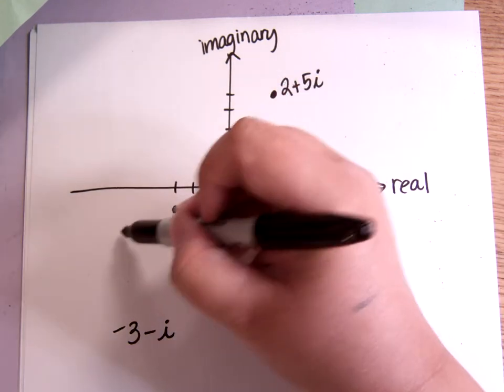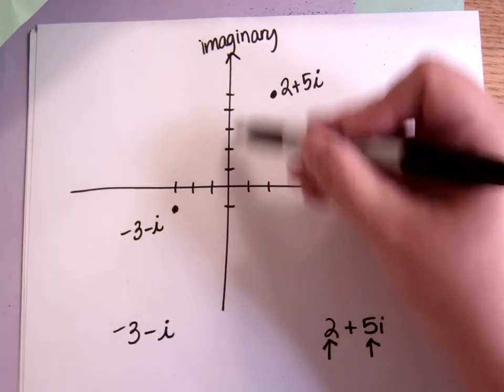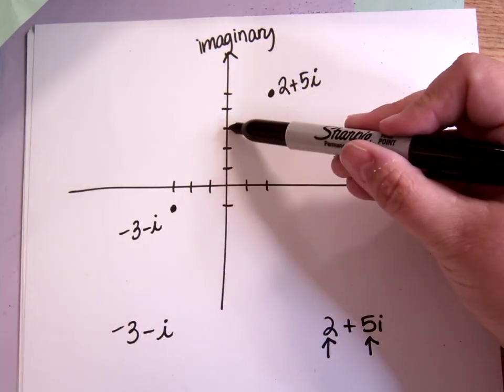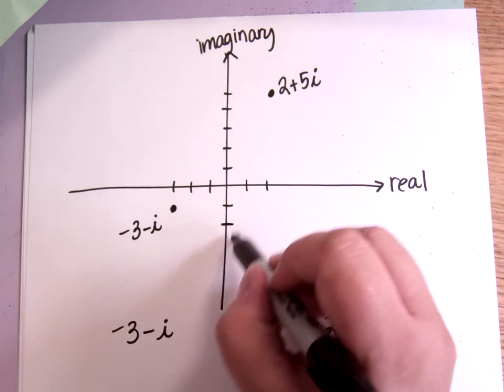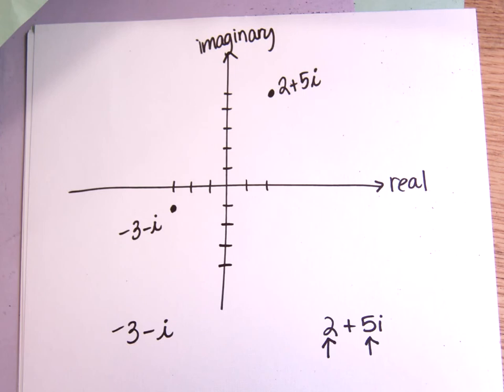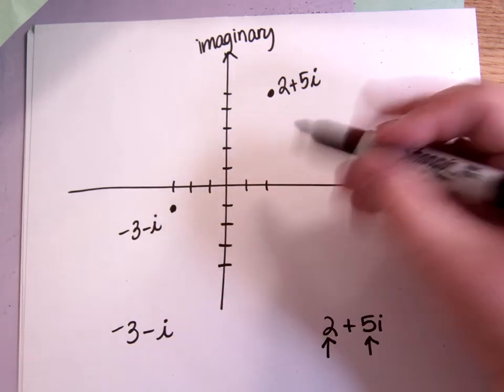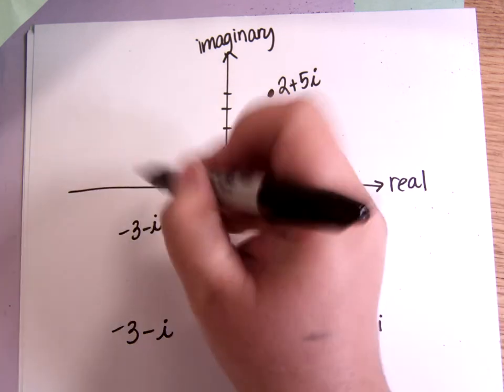So again, i is your vertical axis. So this is 1i, 2i, 3i, 4i, 5i, negative 1i, negative 2i, negative 3i, and so on. And the real numbers axis is your horizontal axis. So this is 1, 2, 3, 4, 5, just the way it normally is.